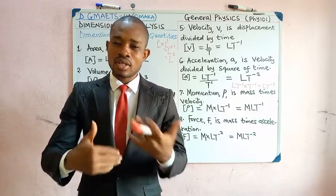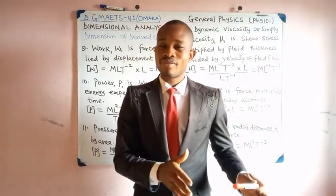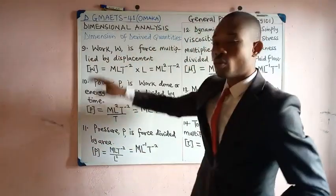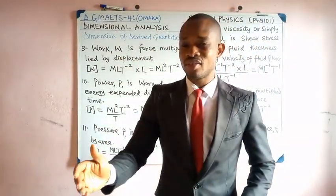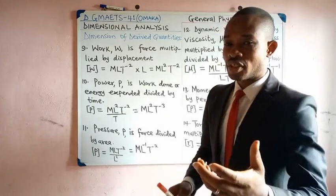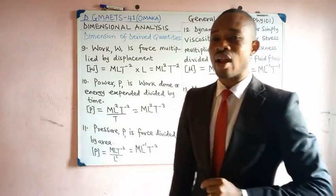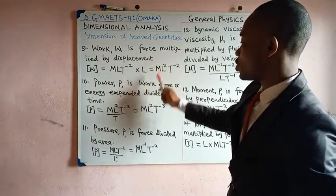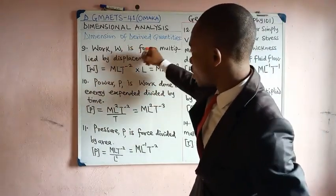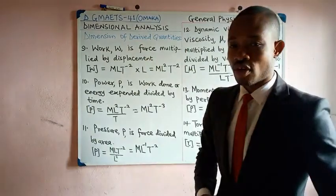Work by definition is force times displacement. The dimension of force is MLT⁻², and the dimension of displacement is L. Multiplying these: MLT⁻² × L = ML²T⁻². The L becomes L² because L¹ × L¹ = L² by the multiplication law of indices.